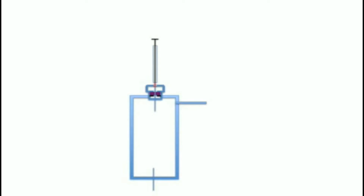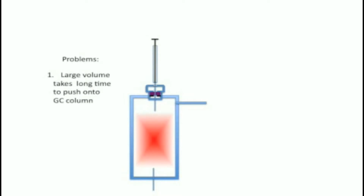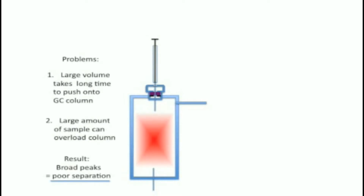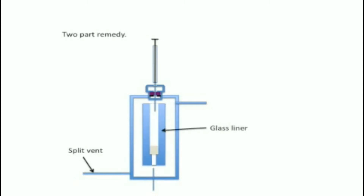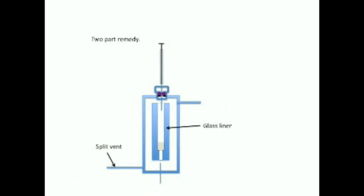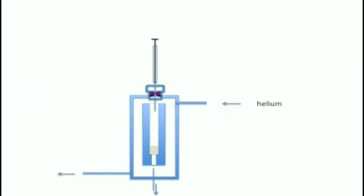If we let the sample gas fill the entire injector, it will take a long time and a large volume of helium to push it all onto the column. Furthermore, even microliter amounts of sample will overload the stationary phase on the capillary. The most common remedy is known as a split injection. We introduce another opening at the bottom to allow gas to escape — this is known as the split vent. We also confine the sample to a smaller volume by inserting a glass liner, which often contains a small bed of silica particles coated with stationary phase at the bottom. The particles enhance vaporization and help focus the gases. As sample vaporizes inside the glass liner, it has two ways to escape: a very small portion goes down the capillary while a much larger portion goes out the vent.